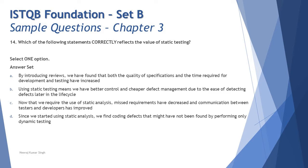Option B says: using static testing means we have better control and cheaper defect management due to ease of detecting defects later in the life cycle. The key word here is 'later.' Reviews are conducted earlier in the life cycle — if you say 'later,' that's dynamic testing, not static testing. So 'later' is a wrong word being used here. Pay attention to each and every word, otherwise answers can be very confusing. Option B is also ruled out.